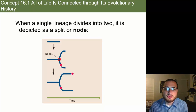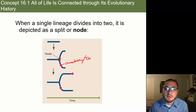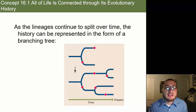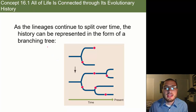A split is known as a node. Sometimes you'll see little dots on the tree — those are used to depict a characteristic or a trait. So you have these lineages or linkages, and then you have these nodes.